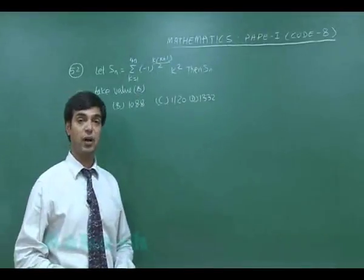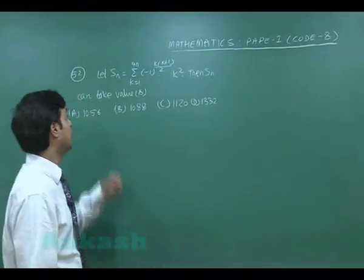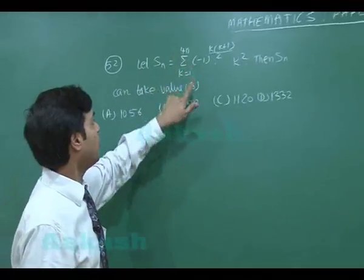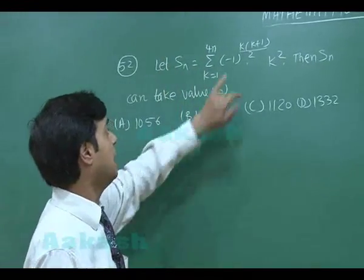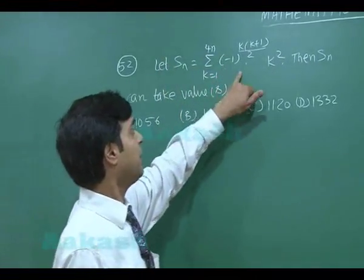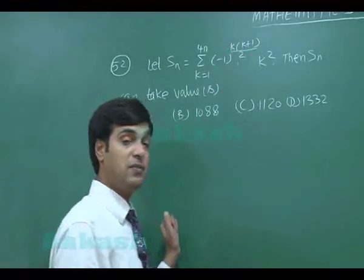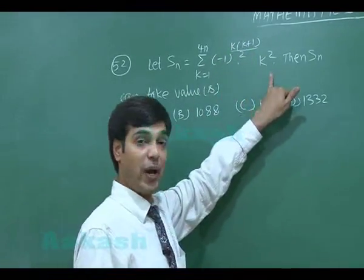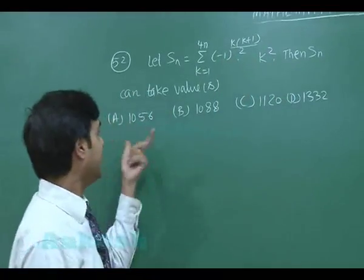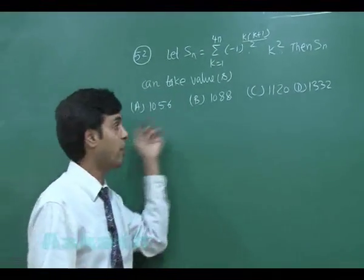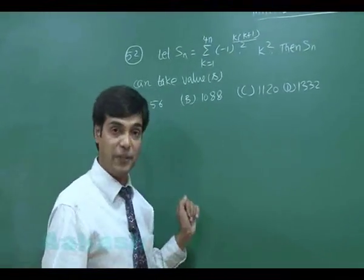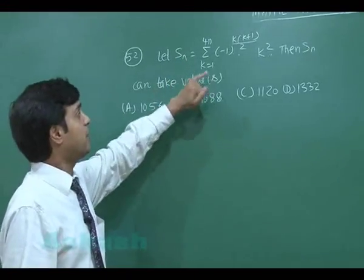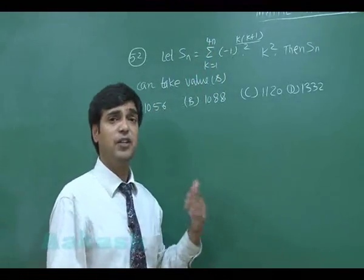Question 52: Let Sn = summation over k from 1 to 4n of (−1)^(k(k+1)/2) × k². Then Sn can take which values from the four given options? Let's try substituting values k = 1, 2, 3, etc.